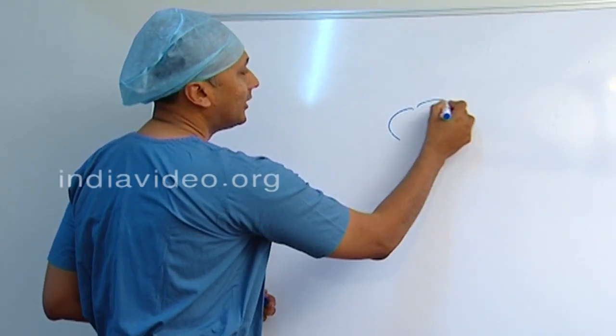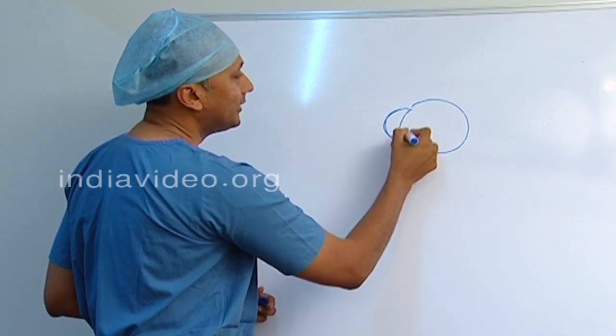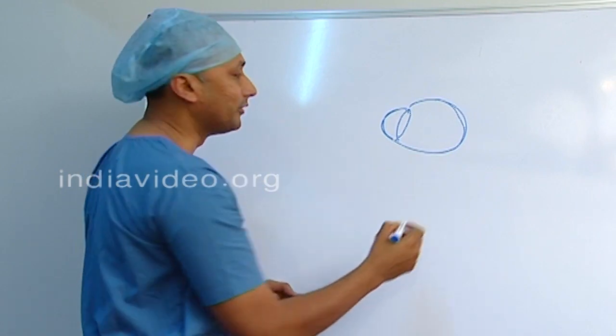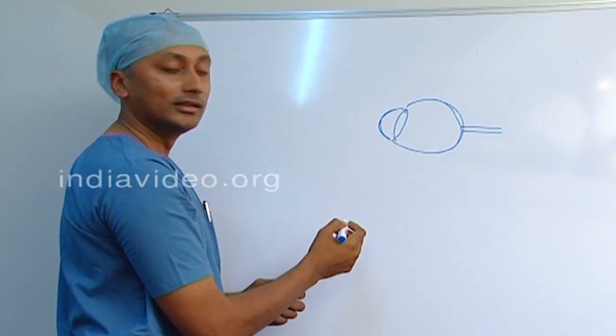If you take a cross section of the eye, the eye looks like this. This is the cornea, this is the lens, and this is the retina which enables us to see very well. And there is a connection to the brain called the optic nerve.